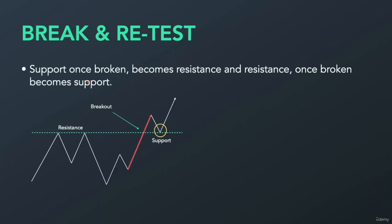Let's take a look at this illustration. We have resistance right here, rejected it twice, and then the third time we had a breakout — we made a higher high. After a higher high, we can assume that we will create a higher low. We can expect that this higher low could possibly establish at the previous resistance level. So this resistance level can now act as a support — that's what we call break and retest. Resistance once broken becomes support.